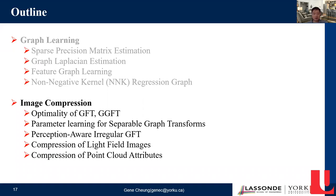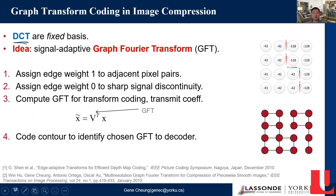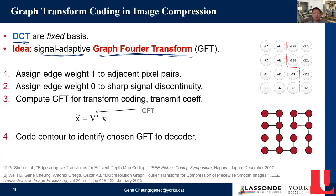That concludes the first half on graph learning techniques. Now we'll look at how these graph learning techniques can be applied to image compression. DCT is frequently used in coding standards — for example, JPEG uses the discrete cosine transform as a fixed transform, applying the same transform to every 8×8 block regardless of the signal. The question is: can we do better by making the transform adaptive to the signal? Certainly, using graph Fourier transform — which can be signal adaptive — seems promising.